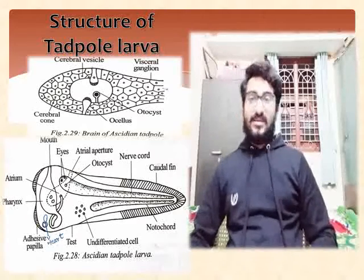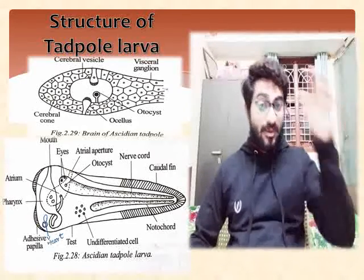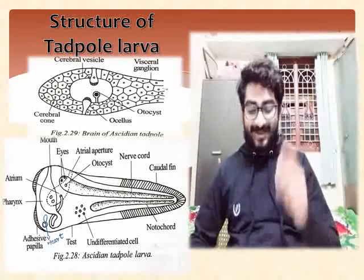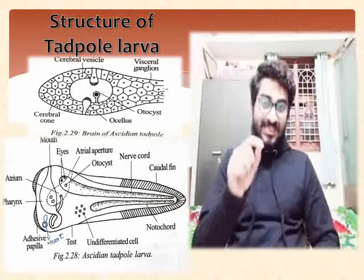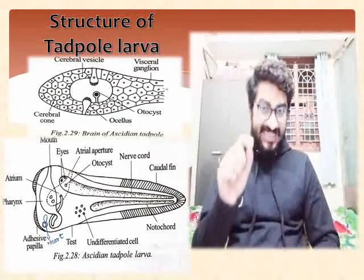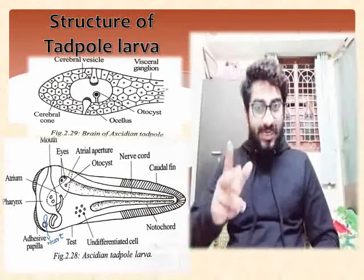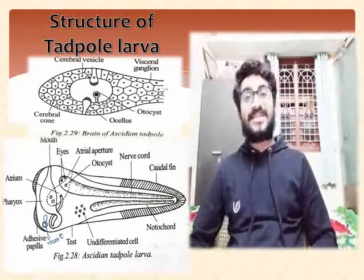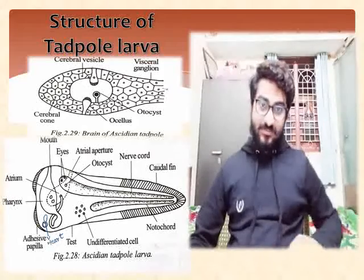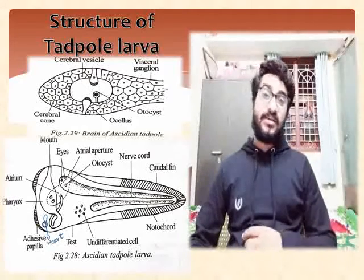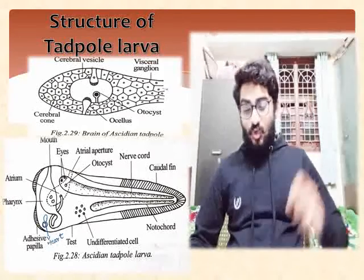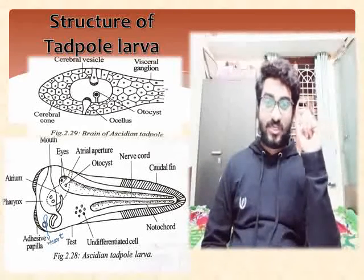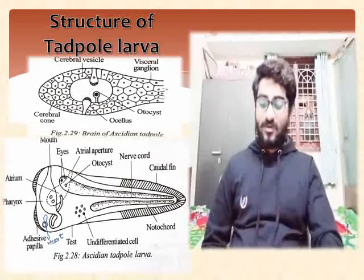The cerebral vesicle encloses or contains the otocyst and two ocelli. Ocellus is the singular form and ocelli is the plural. The otocyst consists of pigmented cells. The function of the otocyst and ocellus is receptive in nature.